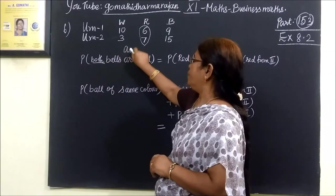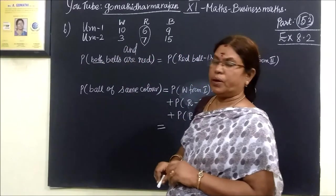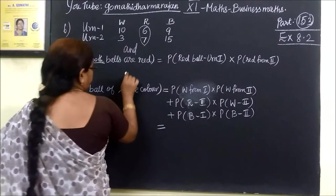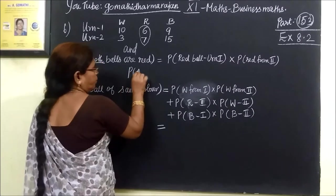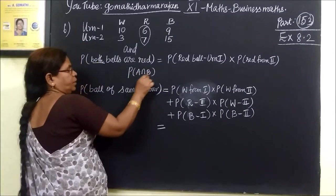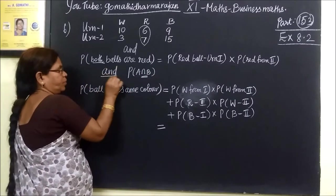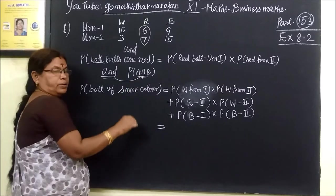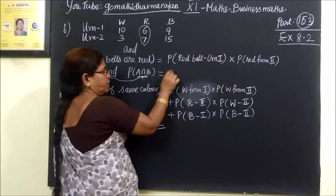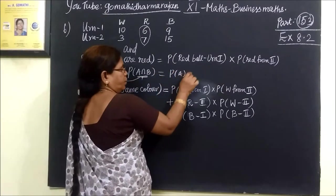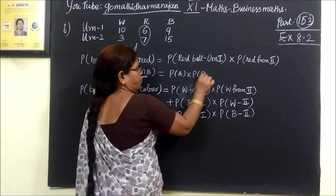We are taking independent events. Independent event, dependent event happening is P of A intersection B. This intersection happening is 'and', and you are using intersection. So P of A intersection B equals P of A into P of B.